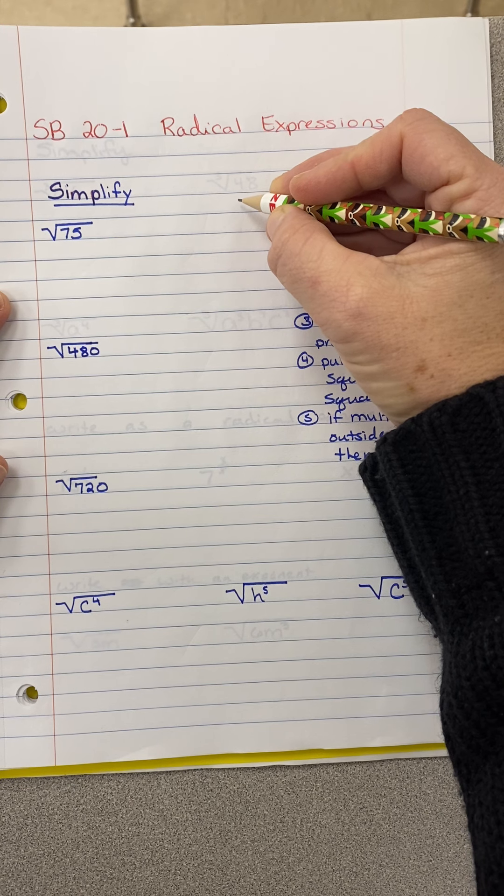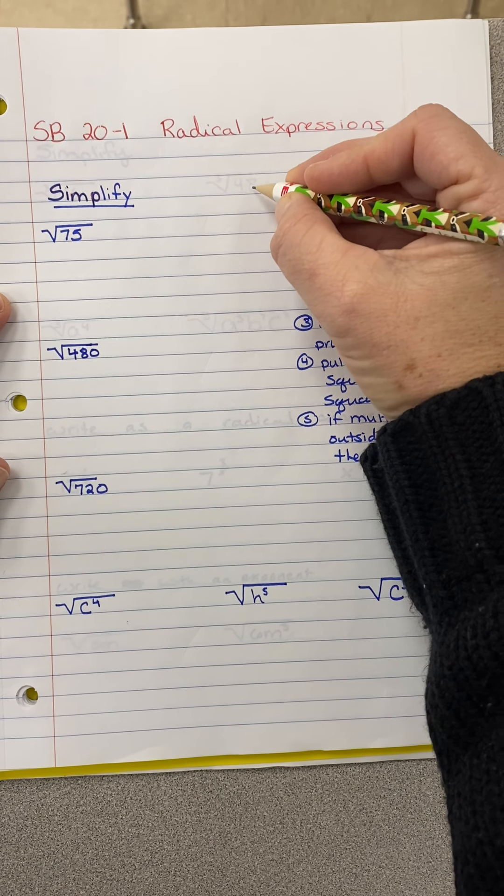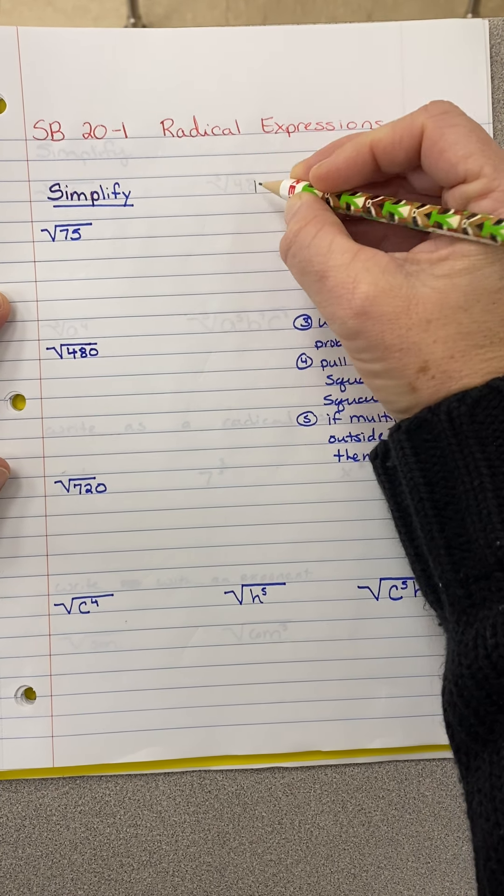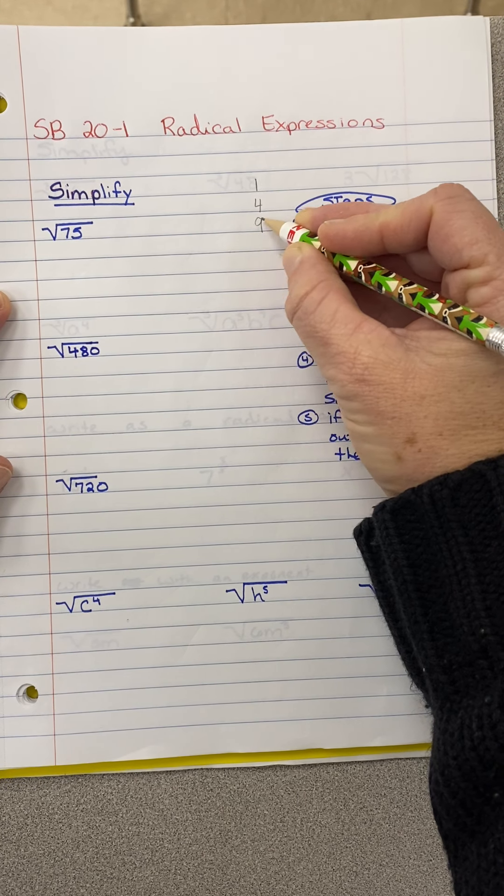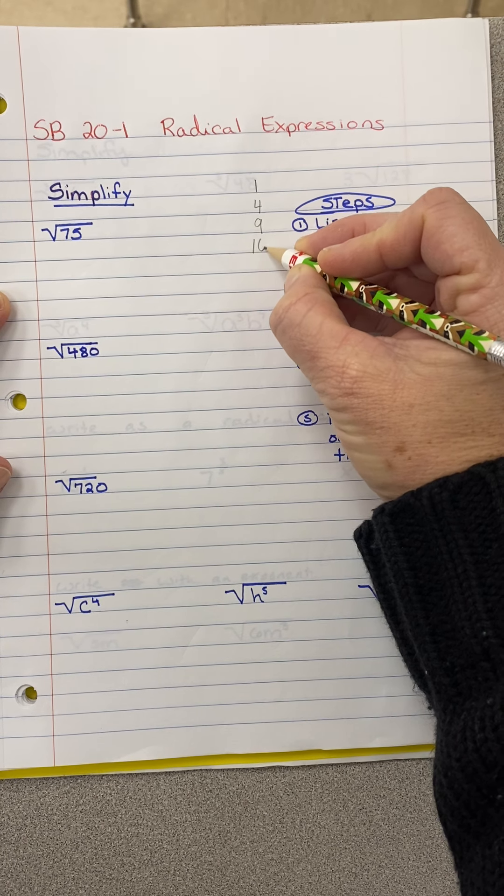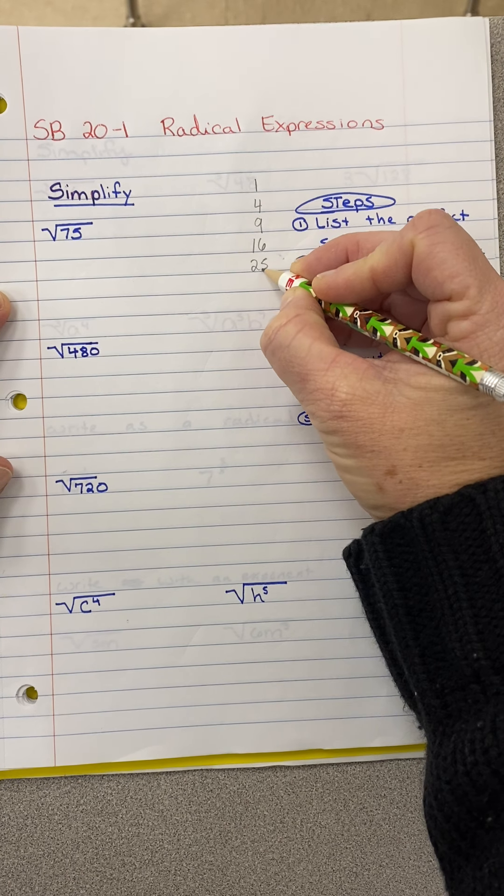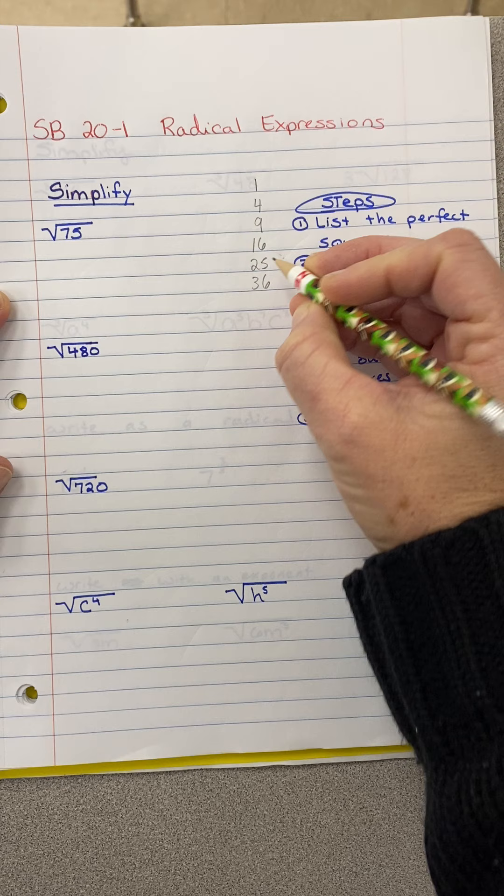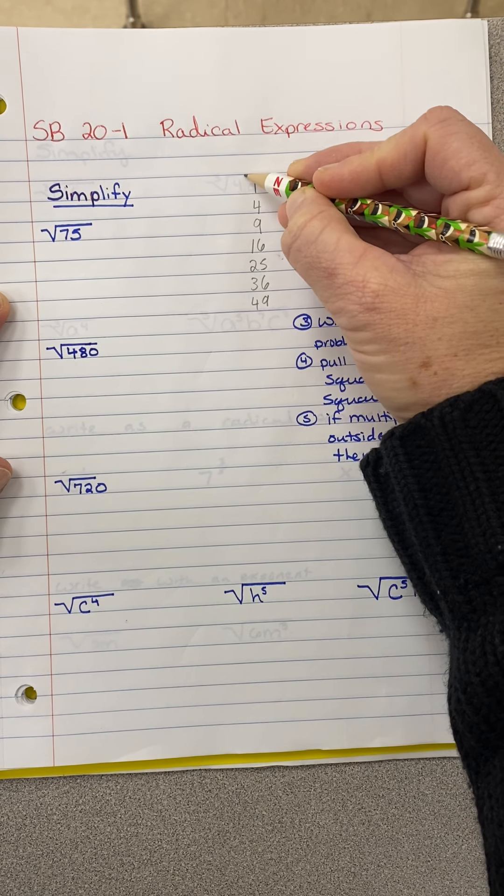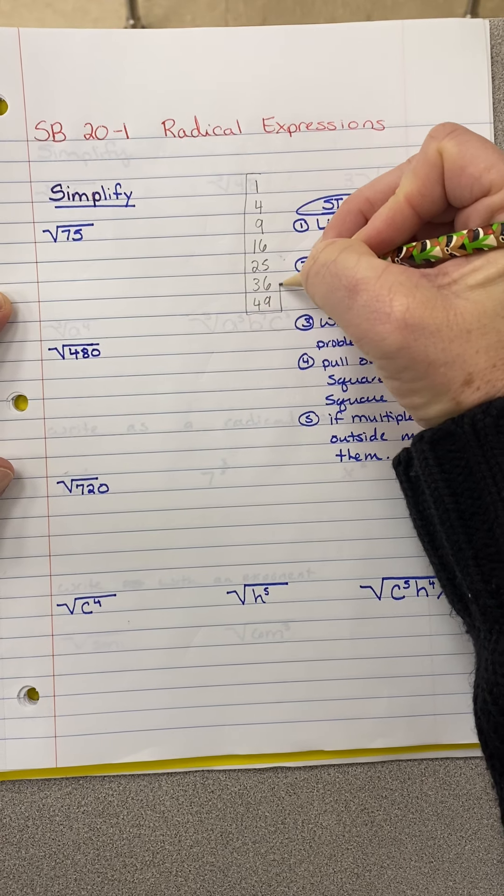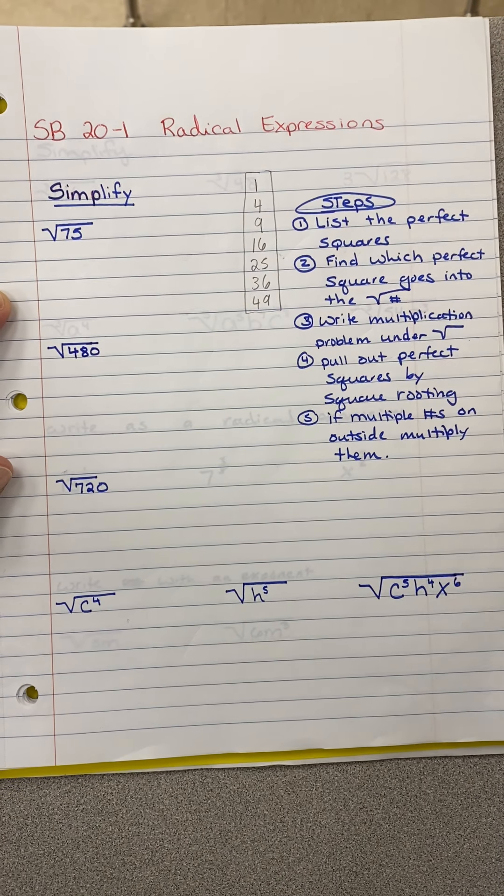what I like is to just go ahead and list the perfect squares on the side so you can reference them. The way I get my perfect squares is I say what's one times one? One. Two times two is four. Three times three is nine. Four times four is sixteen. Five times five is twenty-five. Six times six is thirty-six. Seven times seven is forty-nine. I know that's not all of them, but I'd just like to list a few.